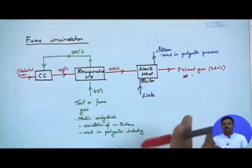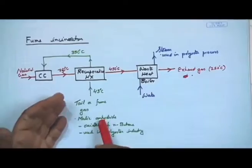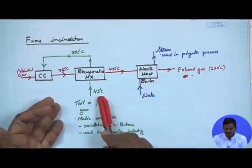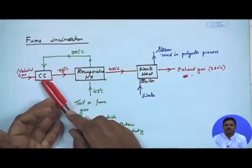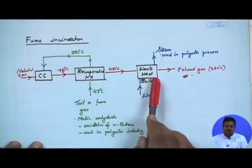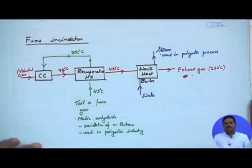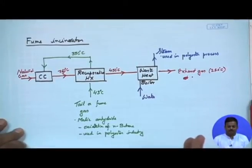What a wonderful configuration — the tail fume gas at low temperature, once heated and passed to the combustion chamber, acts both as a source of heat for steam generation and also incinerates the harmful gas that otherwise cannot be released into the environment.